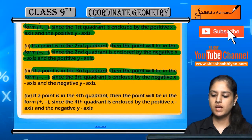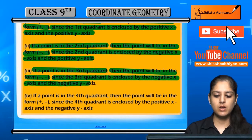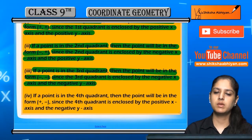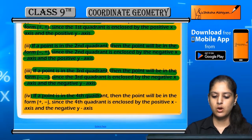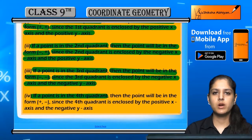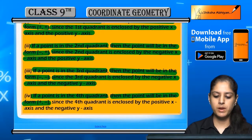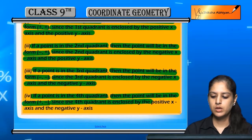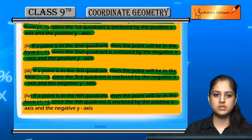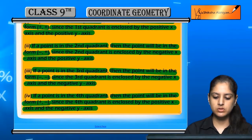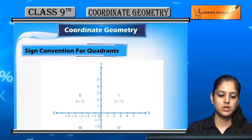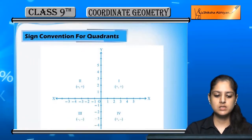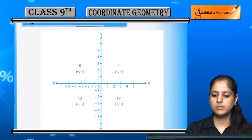In the third quadrant, both the x-axis and y-axis are negative. And if a point is in the fourth quadrant, then the point is in the form (+, -), because in the fourth quadrant the x-axis is positive and the y-axis is negative.